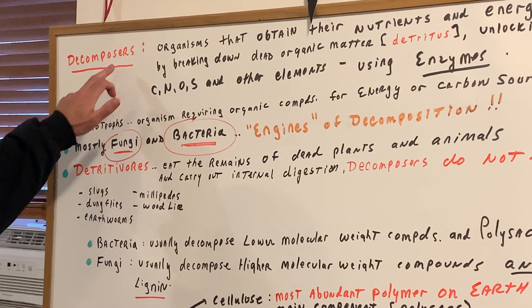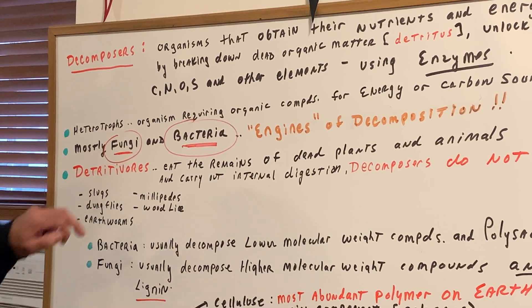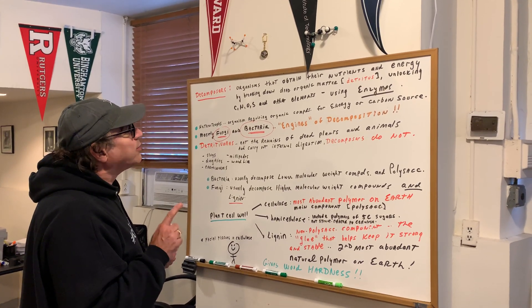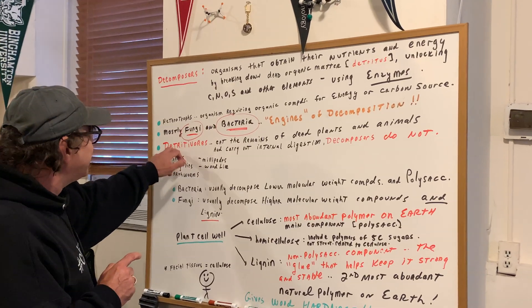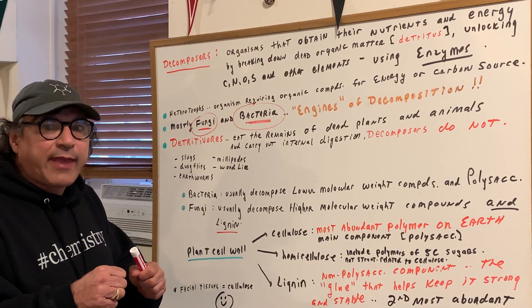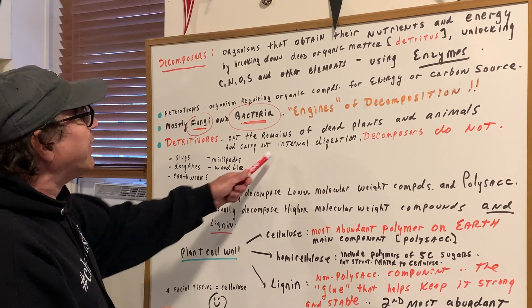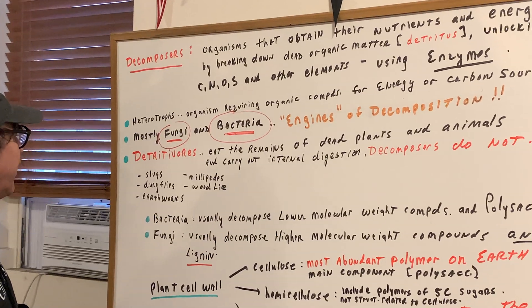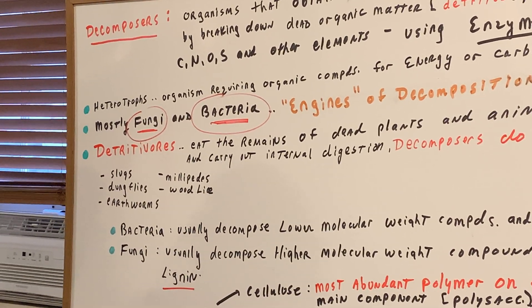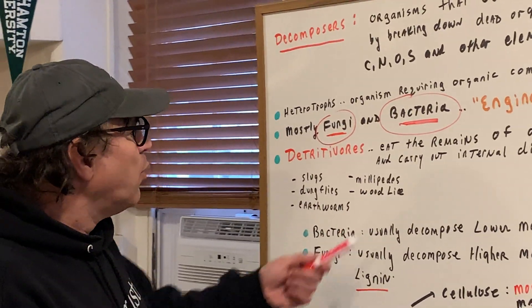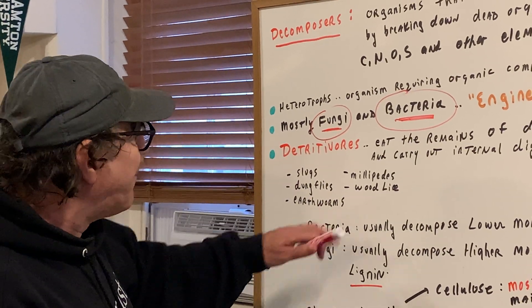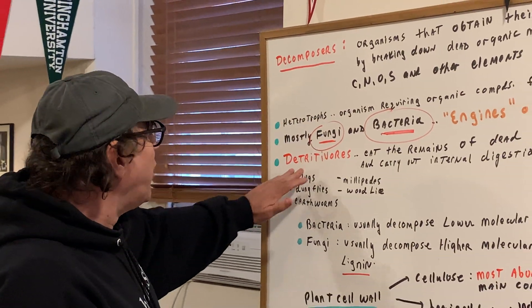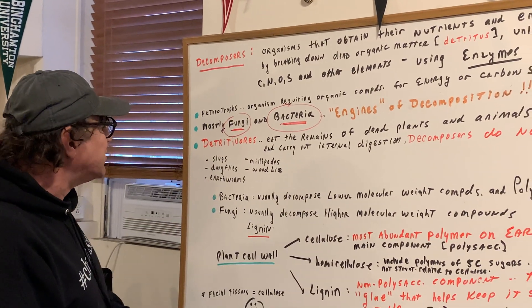A very similar term that many teachers interchangeably use is called a detritivore, but you've got to be a little careful on this. A decomposer obtains their nutrients by breaking down dead organic matter. The detritivores eat the remains — they don't just break it down. They eat the remains of dead plants and animals and carry out internal digestion, where decomposers don't eat it. Some examples of detritivores include slugs, dung flies, millipedes, wood lice, and earthworms. Bacteria and fungi are the decomposers.